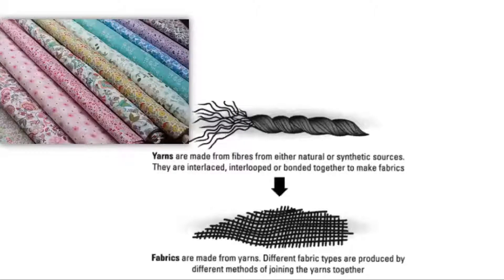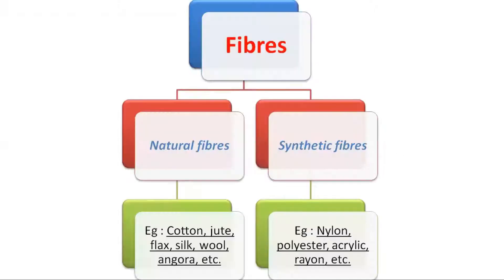You might be thinking: why are there so many variations in fabrics? Why do we have so many varieties like cotton, wool, silk, rayon, nylon, denim, etc.? It is because we have variations in the fibers. Fibers are obtained from two sources: the first is the natural source and the second is the synthetic source. So fibers are of two types — natural fibers and synthetic fibers.